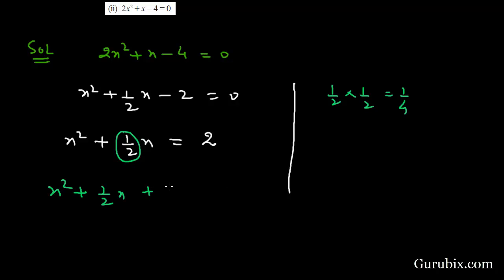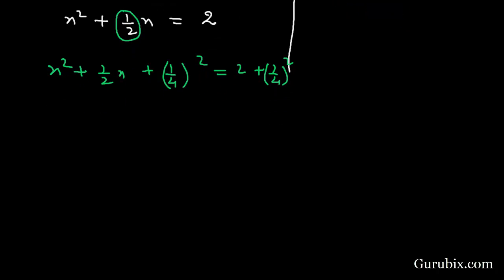We can write these three terms as (x + 1/4)². On the right side we have 2 + 1/16. If we add these two values, we get 33/16.